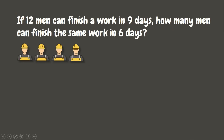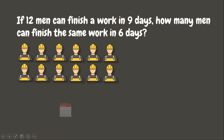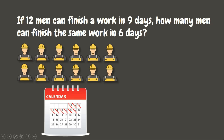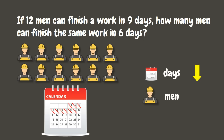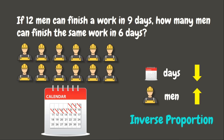If 12 men can finish a work in nine days, how many men can finish the same work in six days? In the given situation, when the number of days decreases, the number of men should increase. This is an example of inverse proportion. Now, what is an inverse proportion?